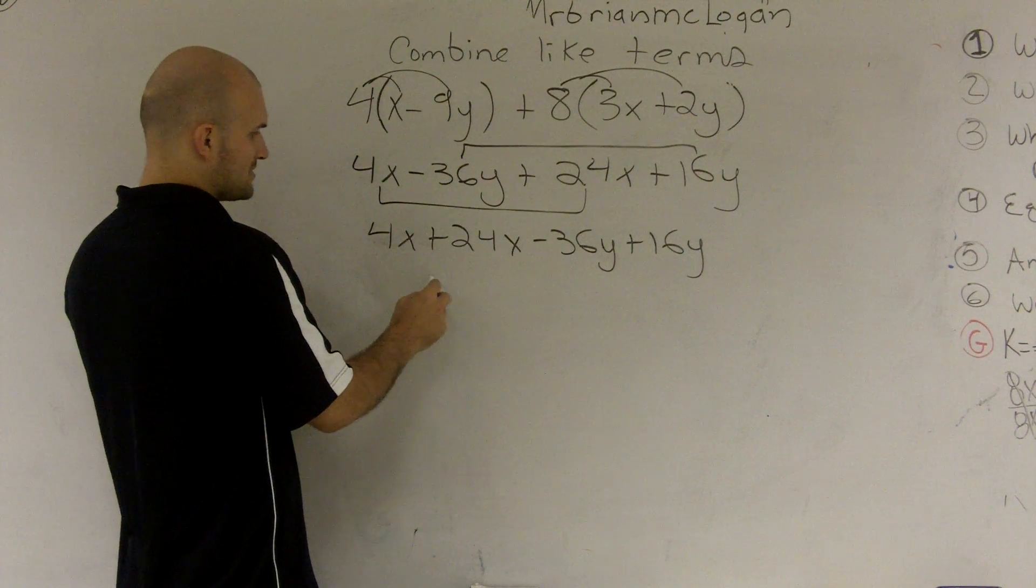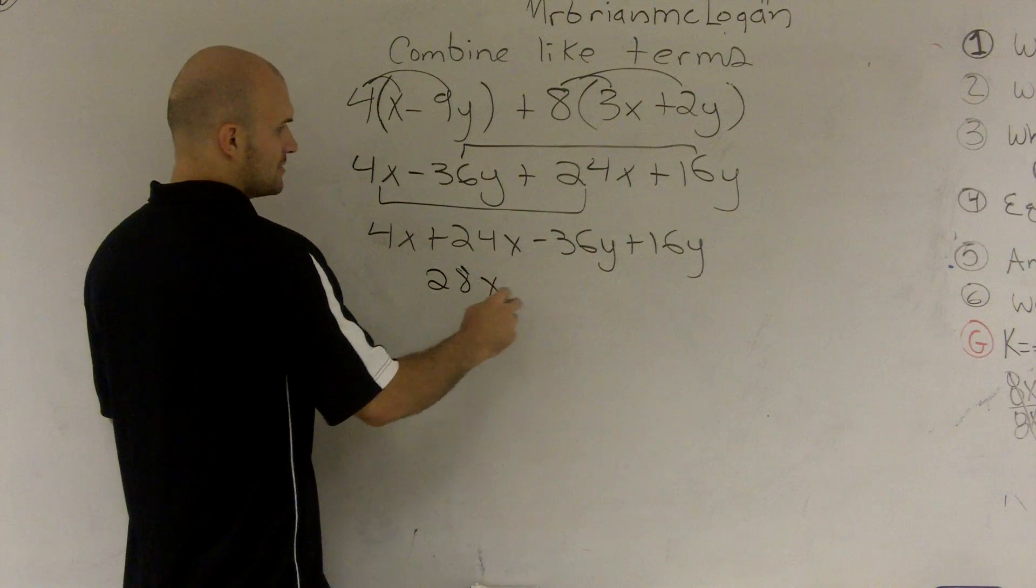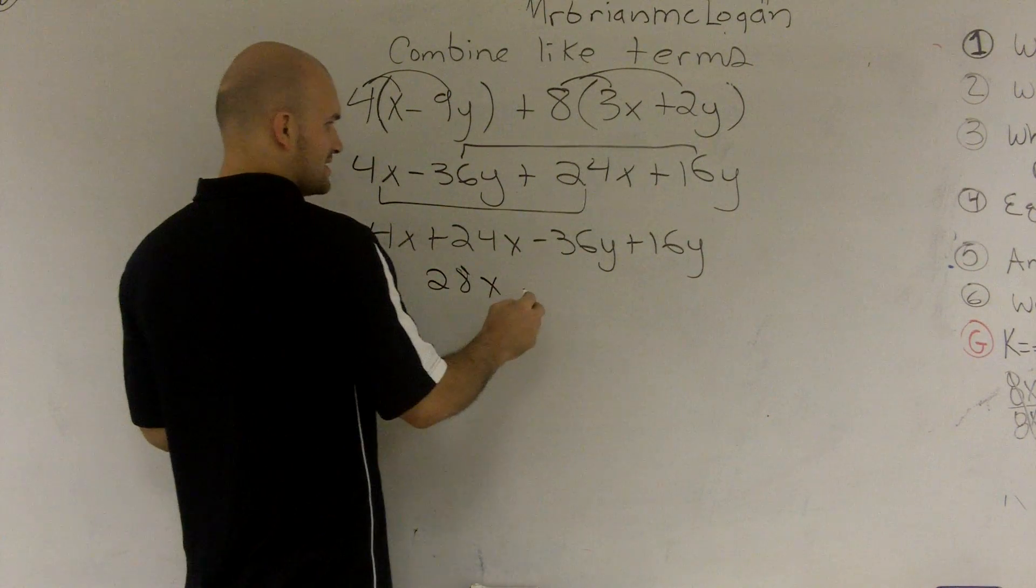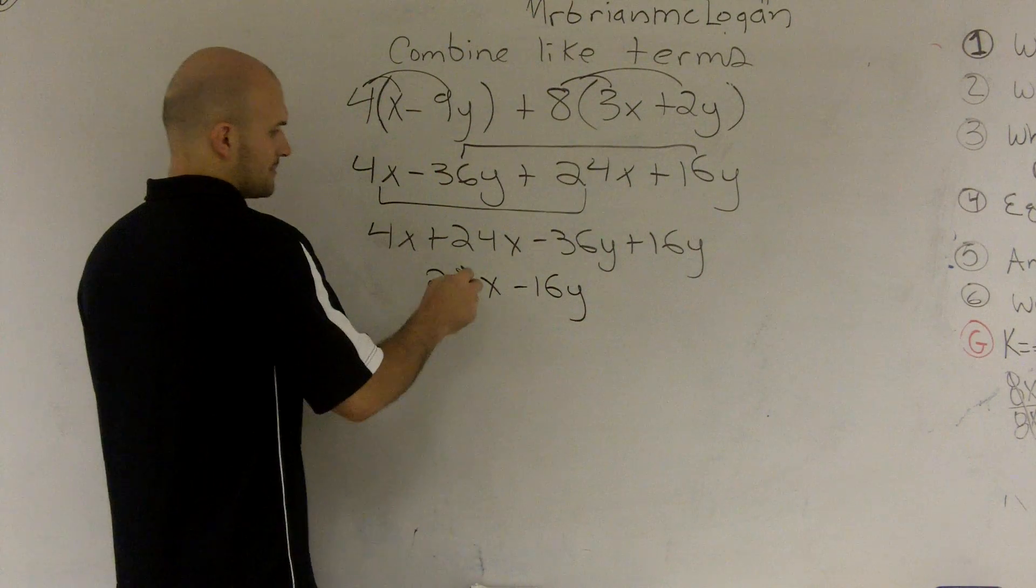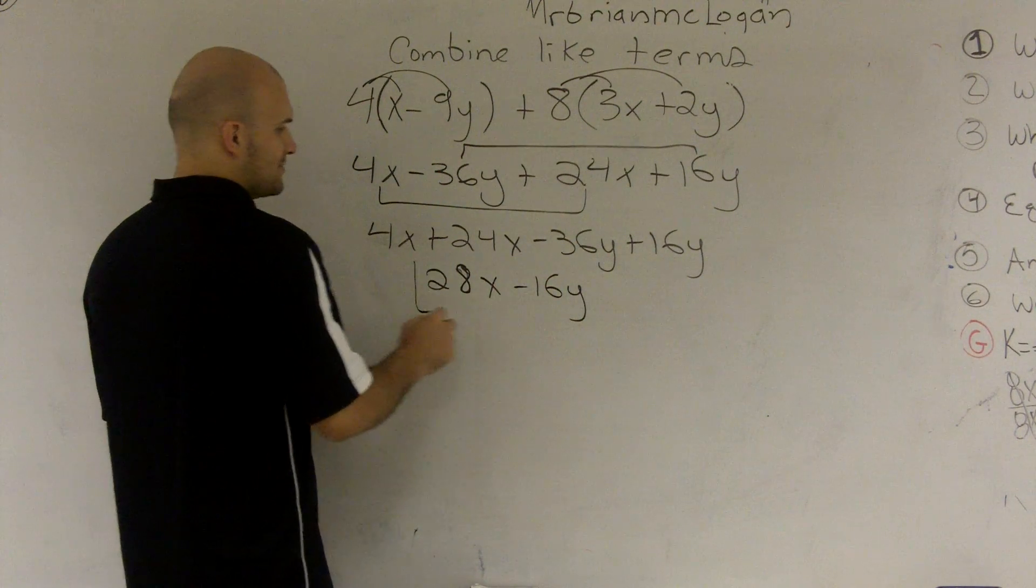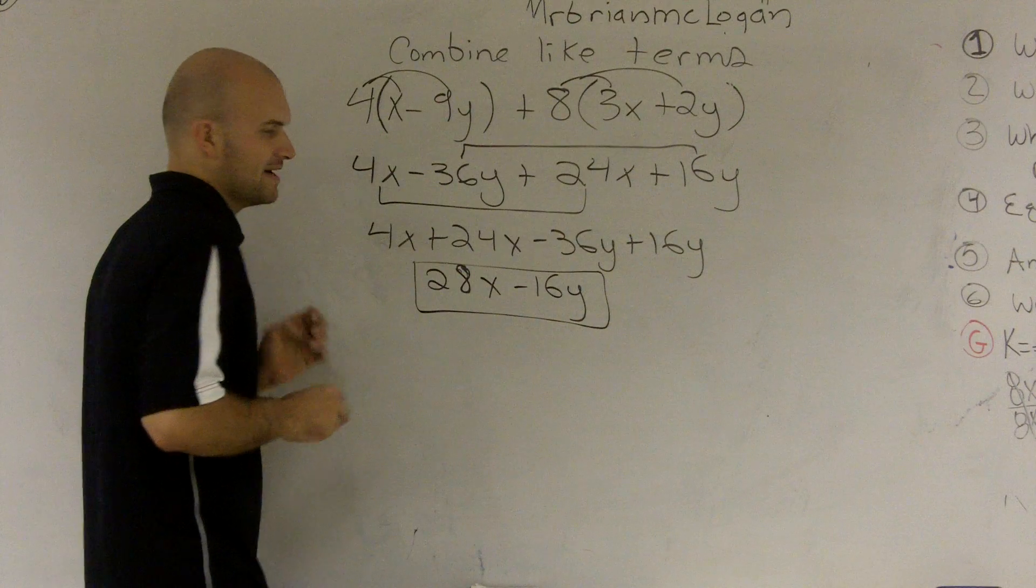4 apples plus 24 apples equals 28 apples. Negative 36y plus 16y is negative 16y. Therefore, that's going to be my final answer.